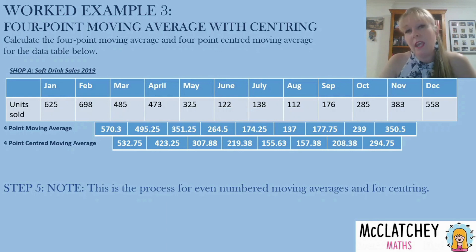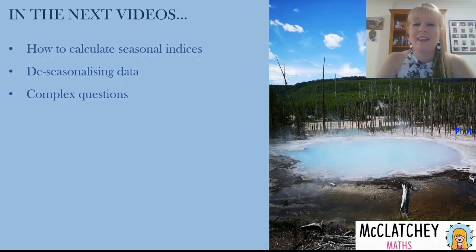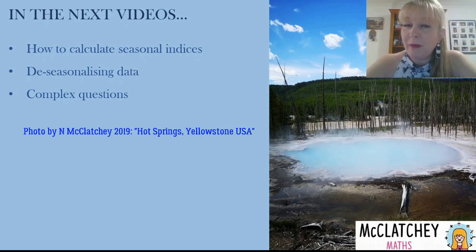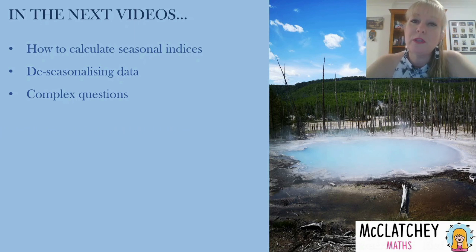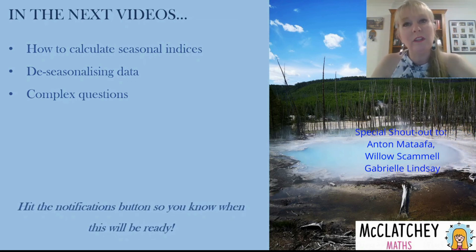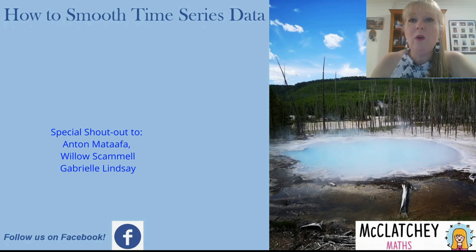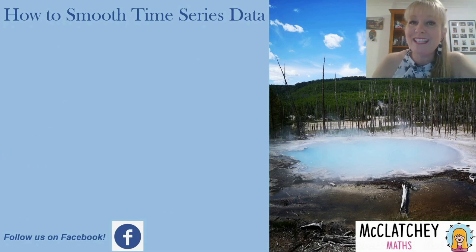So this is our process for when we're using even-numbered moving averages and for centering. You could do six-point or ten-point moving averages — with a lot of data you'd be better off using a spreadsheet. In our upcoming videos we're going to look at seasonal indices and how to de-seasonalise data, which is another way to smooth data, and we'll also focus on some complex questions from past exams. Hit that notifications button to find out when those videos are available. Welcome to all our new subscribers this month, and please join us here or follow us on Facebook. Have a wonderful day.